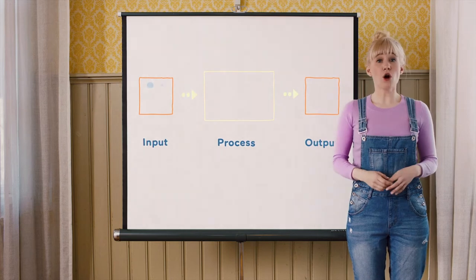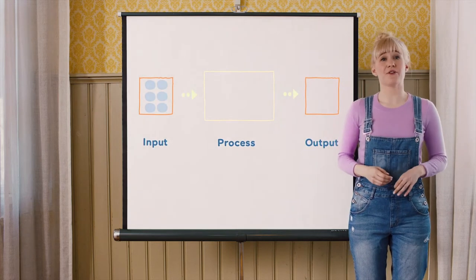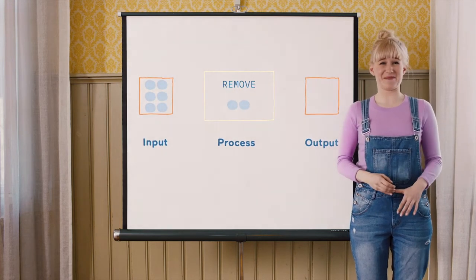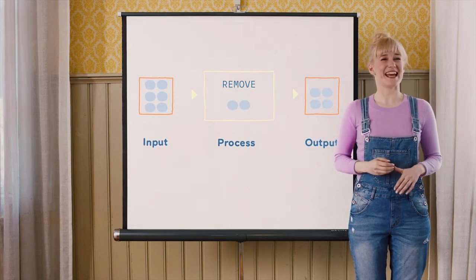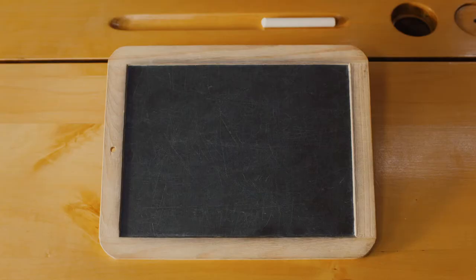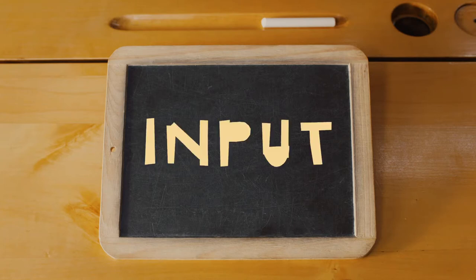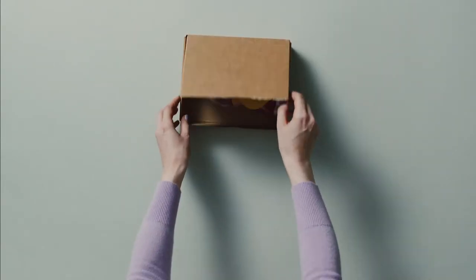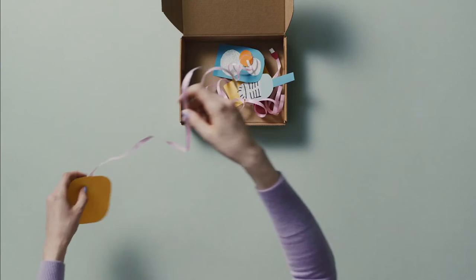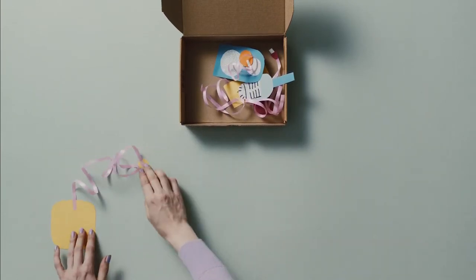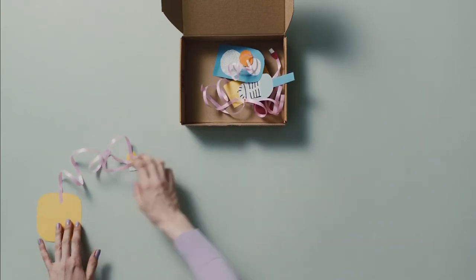One of the things that all computers share is the information processing system called input-output, or I/O. Let's look at it in more detail. First of all, in order to interact with the computer we need input. Input is when we do something to a computer or give it information. The input could be from a keyboard, a touch screen, a sensor, or even another program.